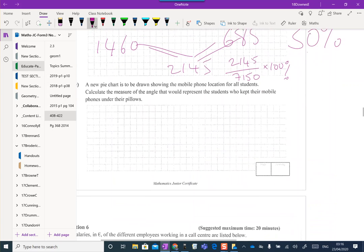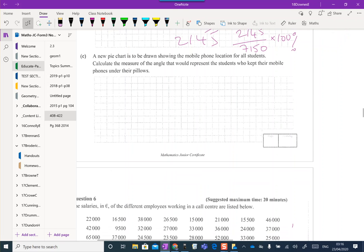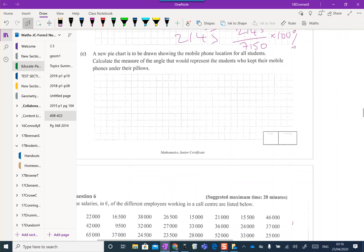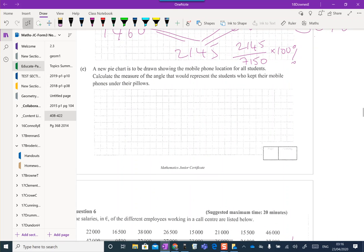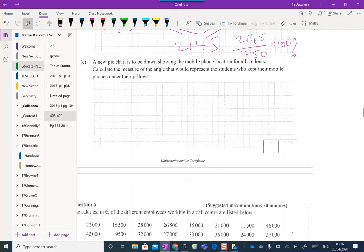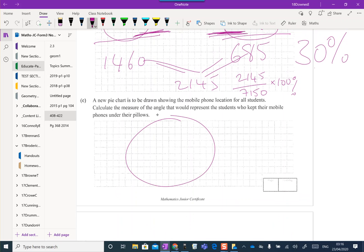So a new pie chart is to be drawn showing the mobile phone location for all students. Calculate the measure of the angle that would represent students who kept their mobile phones under their pillows. What they're saying basically is this would be a pie chart, and it doesn't discriminate for gender. It's just boys and girls all together. What percentage? It's a good idea to put your first sector here. It's just something we do in maths. If I'm putting 30% in here, they're asking what angle should it be?